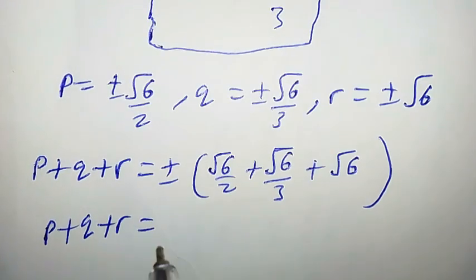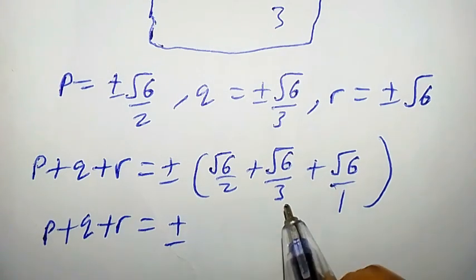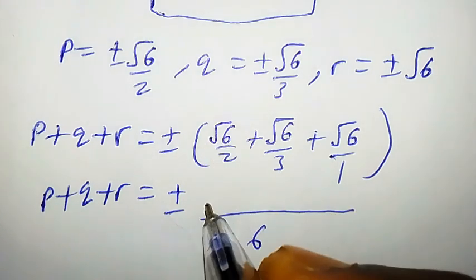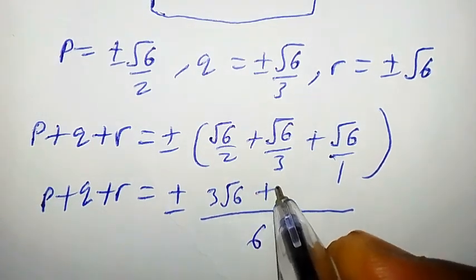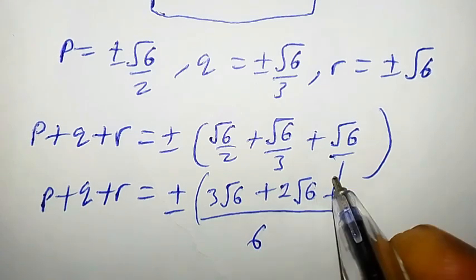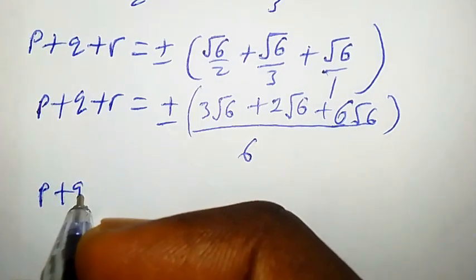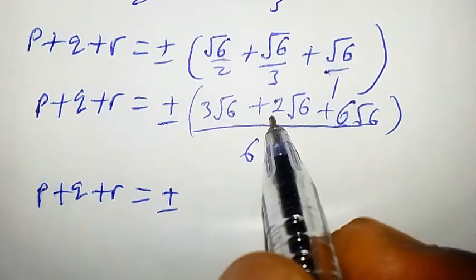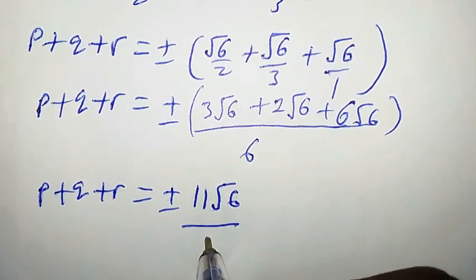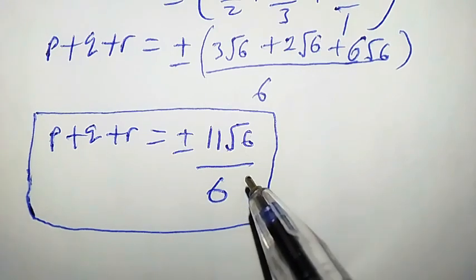P plus Q plus R equals plus or minus. Taking the LCM, which is 6: 6 over 2 is 3, so 3 times root 6; 6 over 3 is 2, so 2 times root 6; and 6 over 1 is 6, so 6 times root 6. Adding: 3 plus 2 plus 6 is 11. So P plus Q plus R equals plus or minus 11 root 6 over 6. This is the required solution.